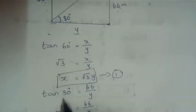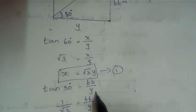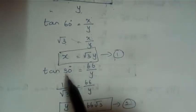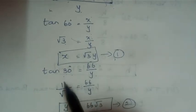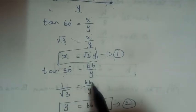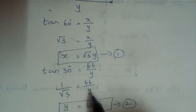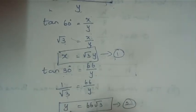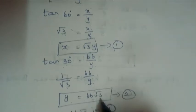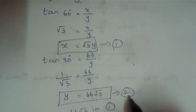Now for tan 30°, the opposite is 66 (the apartment height) and the adjacent is y. So tan 30° = 66/y. Since tan 30° = 1/√3, we get 1/√3 = 66/y. Cross-multiplying gives y = 66√3 — this is Equation 2.